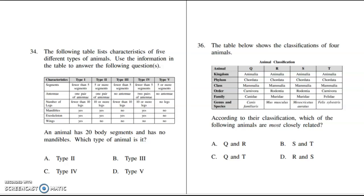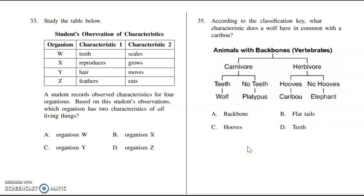Number 34 says the following table lists characteristics of five different types of animals. Use the information in the table to answer the following questions. An animal has 20 body segments and has no mandibles, which are jaw bones. Which type of animal is it? So if it has 20 body segments, that's five or more, so it's going to be either this one or this one. It also has no mandible. This one has five or more segments but has mandibles. This one says it has no mandible, so five or more segments and no mandible - type V or type five would be our correct answer. D is our correct answer there.